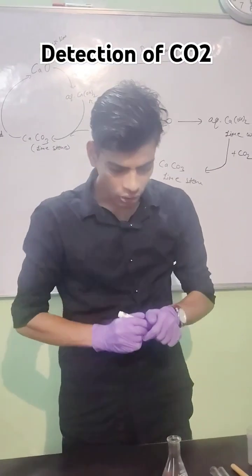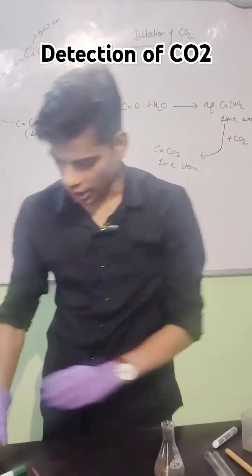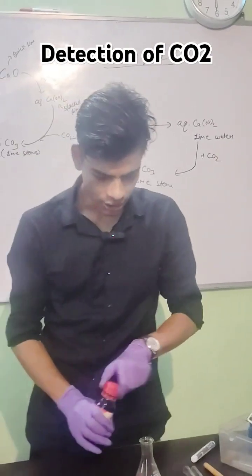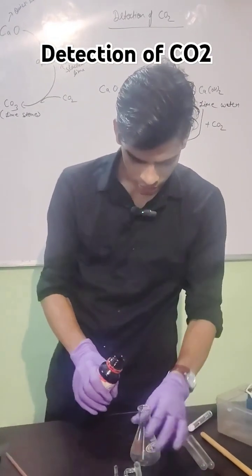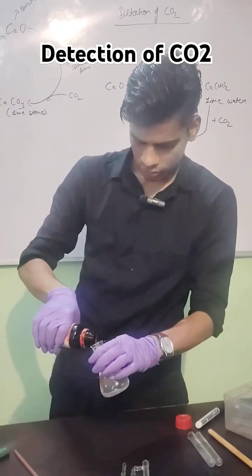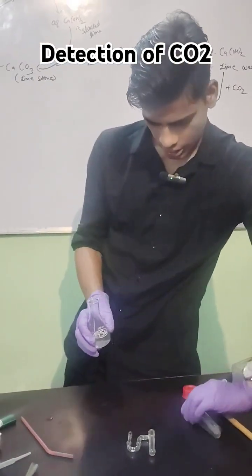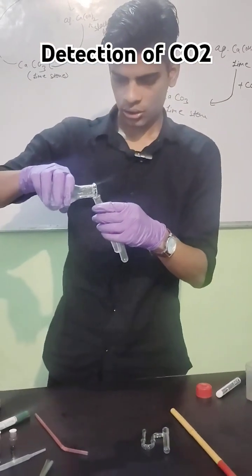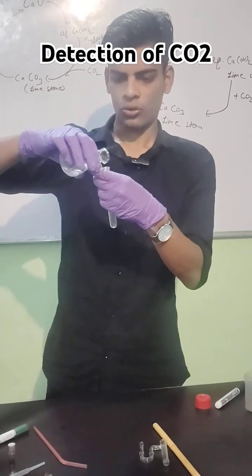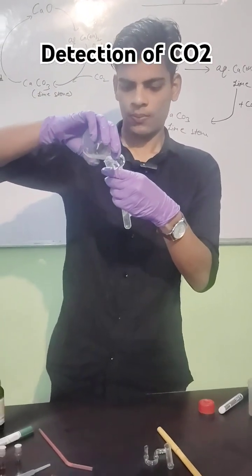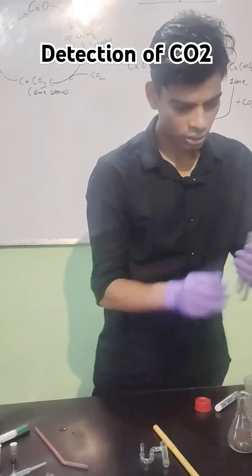So I am going to show you the experiment. You can observe here, this is your conical flask. And in this you can see, this is lime water. Both have a transparent color.